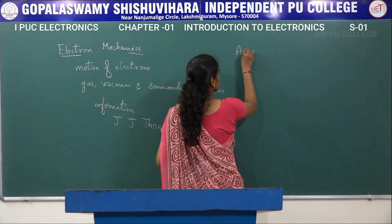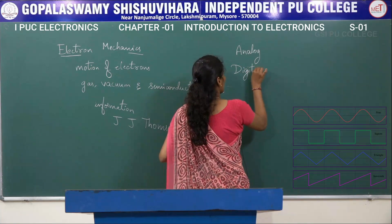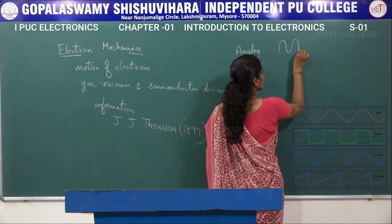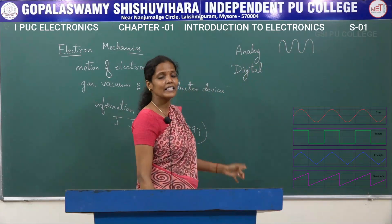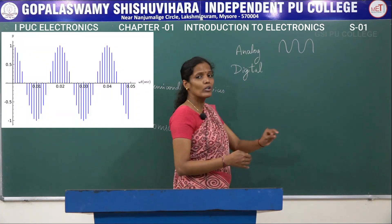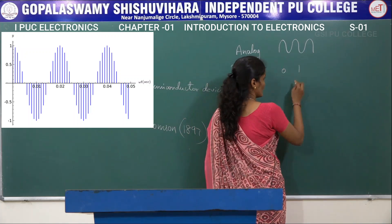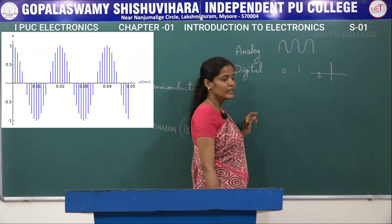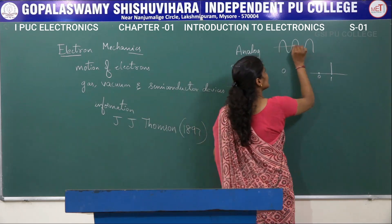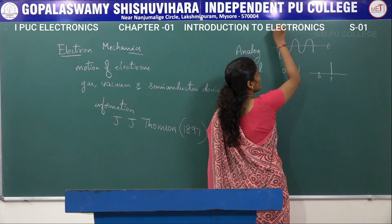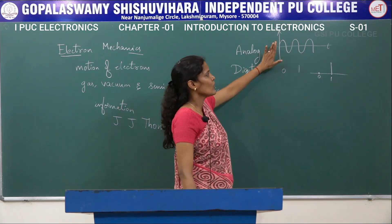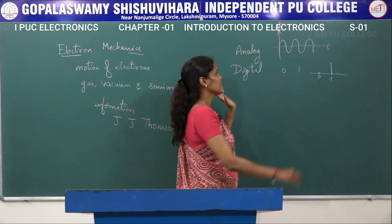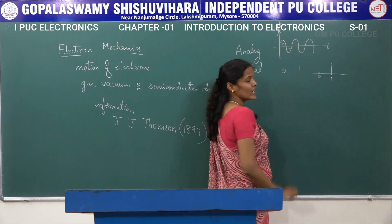Analog electronics is a system dealing with continuously varying signals. Digital electronics is a system dealing with only two different levels — zero and one. In analog electronics, the information is continuously changing. If we plot a graph with time on the x-axis and voltage or current on the y-axis, we get a waveform having both positive and negative half cycles — starting from zero, increasing to a maximum point V-max, then decreasing back to zero.